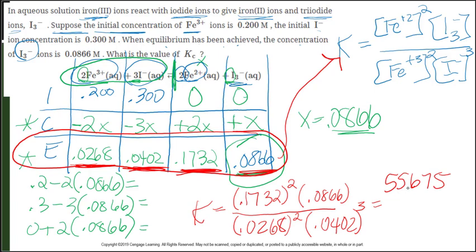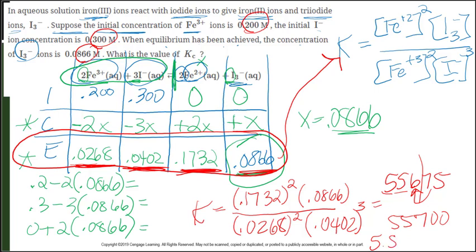The equilibrium values are: Fe³⁺ = 0.0268, I⁻ = 0.0402, Fe²⁺ = 0.1732, I₃⁻ = 0.0866. When I plugged into the calculator, I got 55,675. Going back to the original problem — 3 sig figs throughout — so I round to 3 sig figs: 55,700, or 5.57 times 10 to the 4th power. Remember, K has no units.